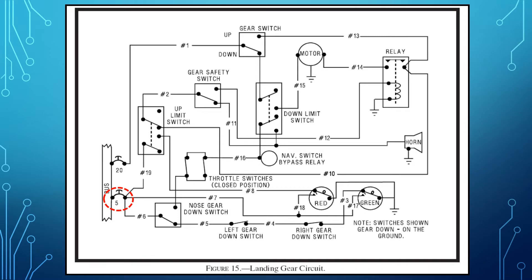Attached to the bus bar is the 5-amp circuit breaker, which protects the circuit for the red up and green down indicator lights, and the 20-amp circuit breaker, which protects the circuit supplying power to the electrical motor which raises and lowers the landing gear.